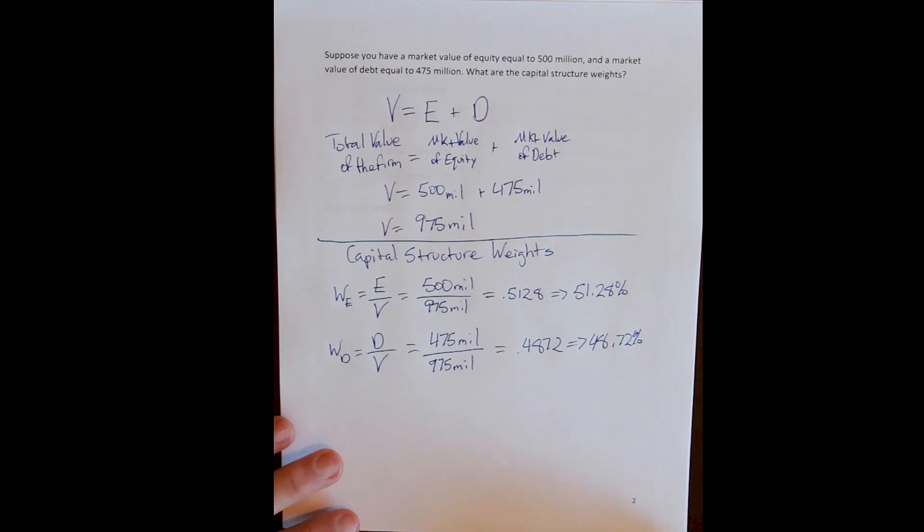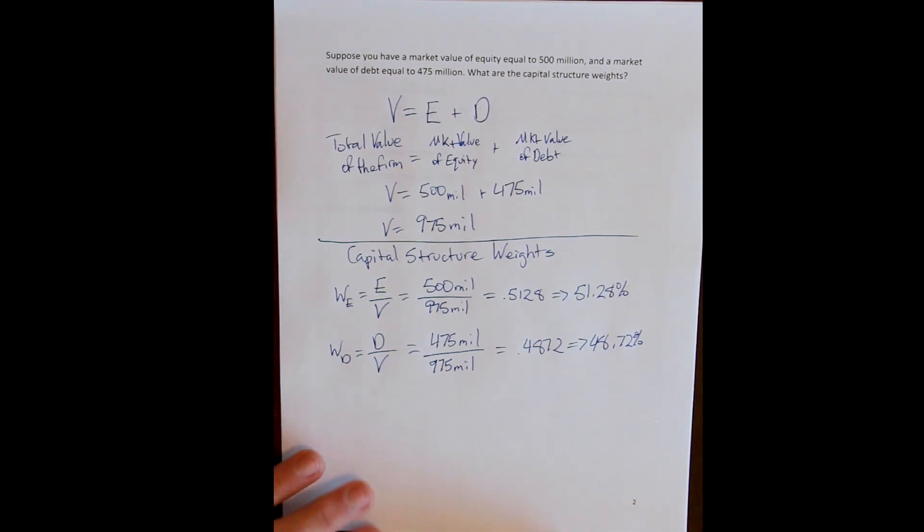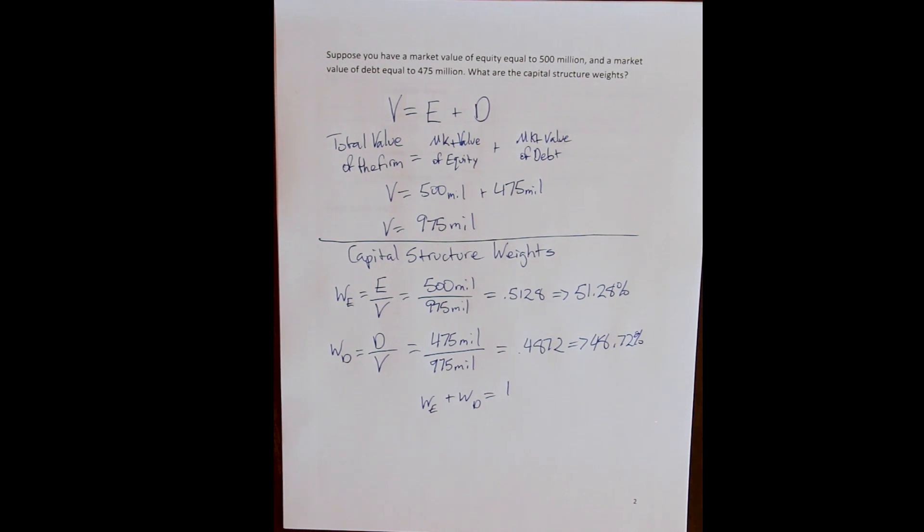Now notice, of course, that the firm, the financing of the firm must add up to one. In other words, the weights of capital must equal one because the firm can't have value that it wasn't provided. Right? So either the value of the firm belongs to its owners or the value of the firm has been promised to its debt holders, but the money doesn't just appear or disappear.